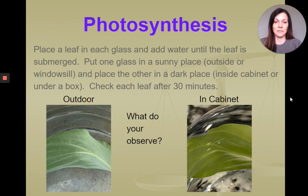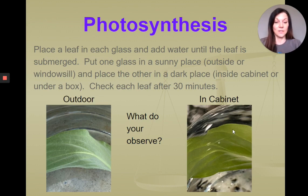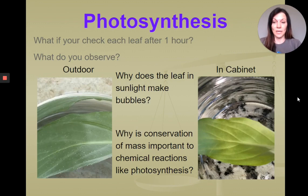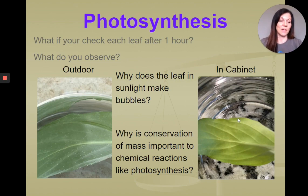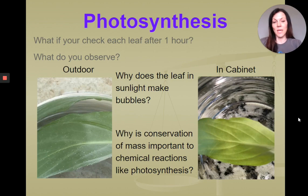What do you see in the differences between the leaves? On the leaf placed in sunlight, you see some bubbles on the outside, and the one that was in the cabinet had no bubbles. After one hour of total time, I went out and looked again. You can see that there are several bubbles on the leaf that was outside in the sunlight, while the cabinet leaf has no bubbles or very few.